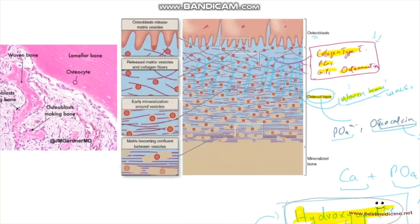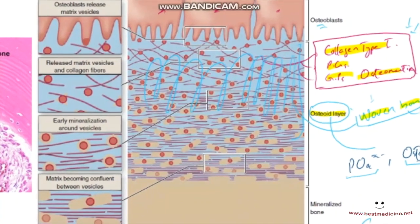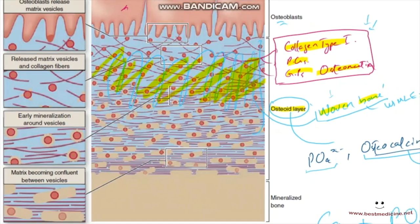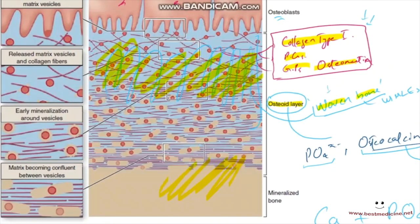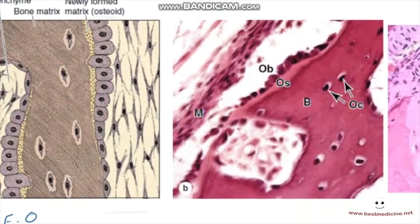So to summarize how osteoblasts form mineralized bone: initially they form a woven bone — a soft bone — and that soft bone is then converted into a mineralized bone.